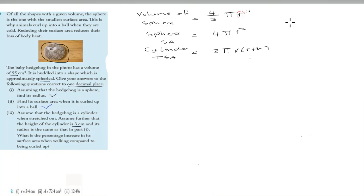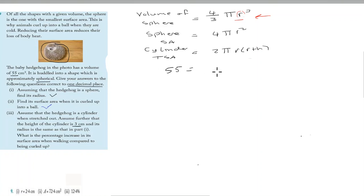Assuming the hedgehog is a sphere, find its radius. We're going to use the volume formula to figure that out. We can say that 55 is equal to four over three times pi times r cubed.